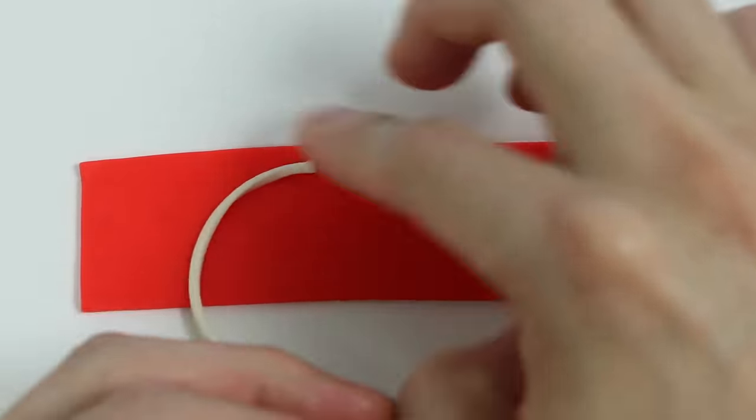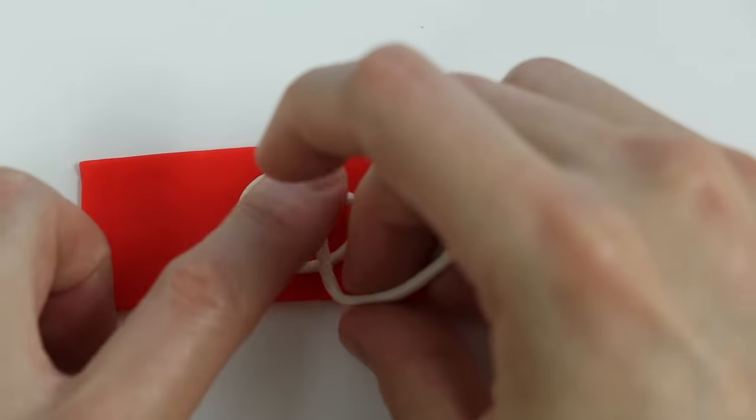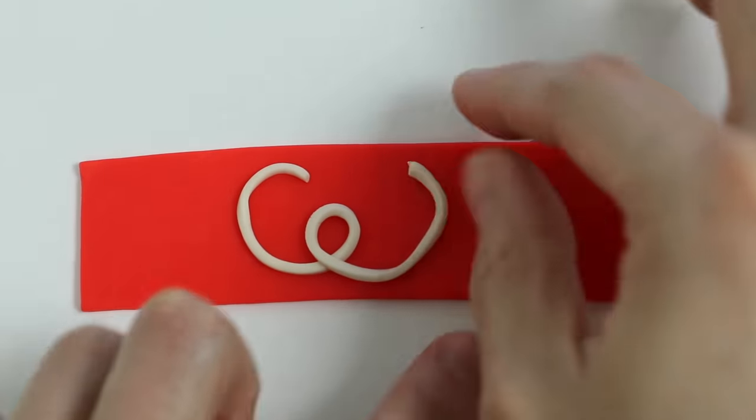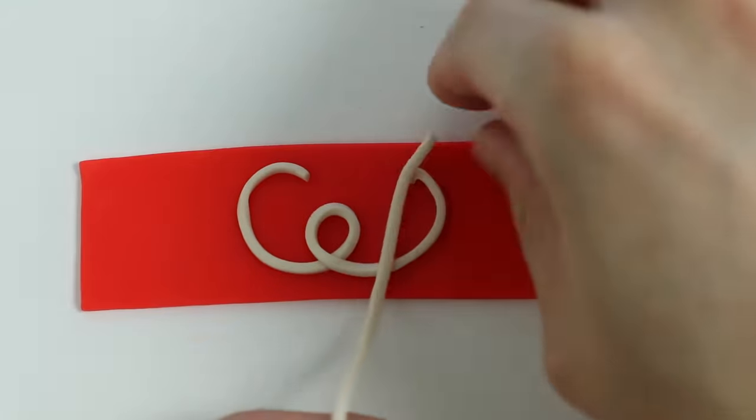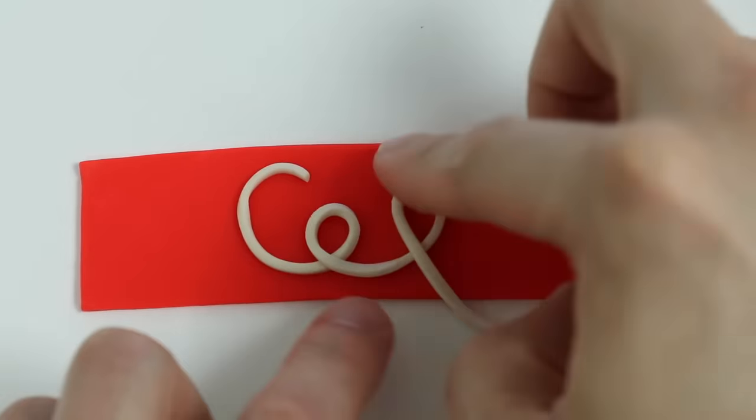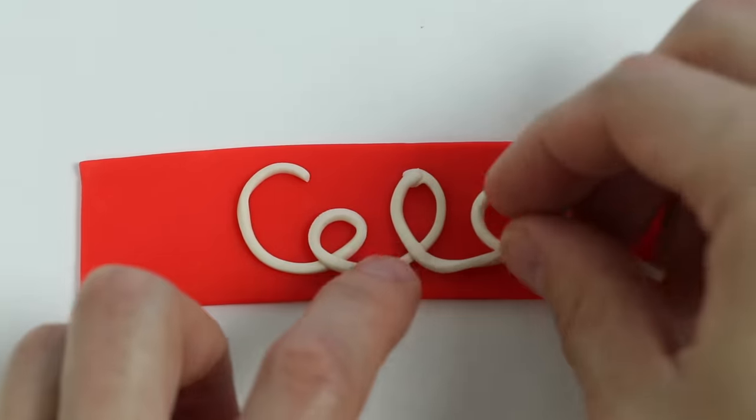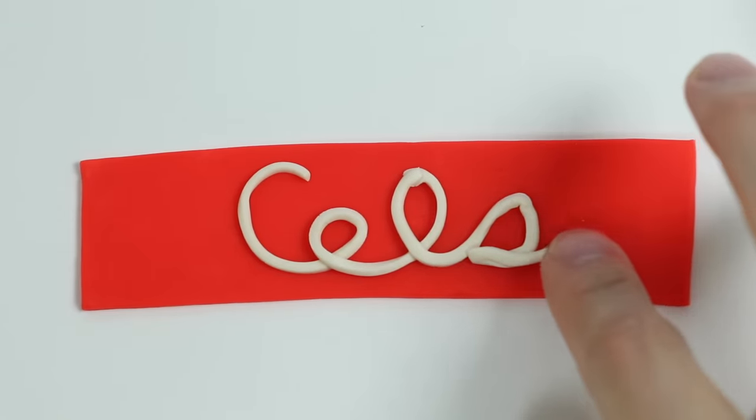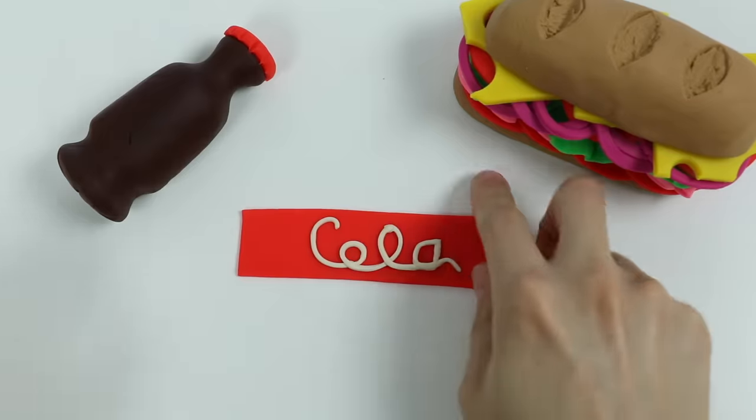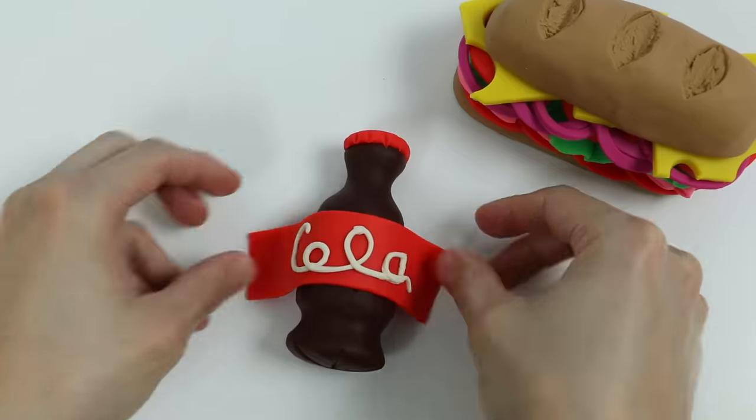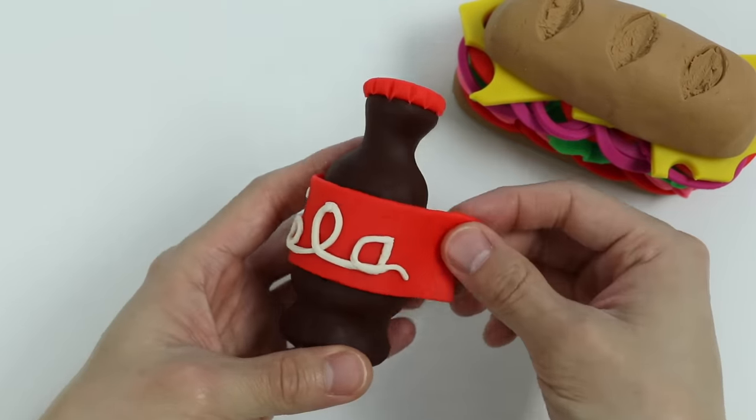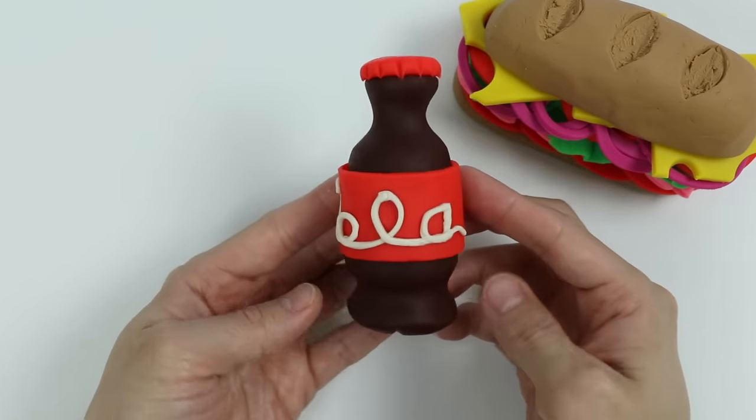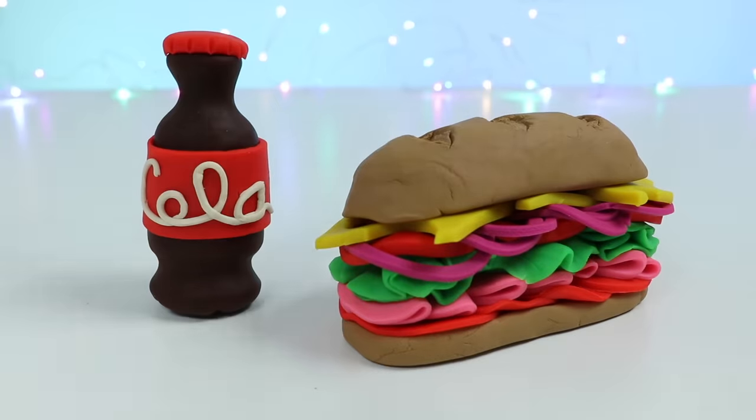Now let's wrap it around the bottle. Perfect, we made our cola label. Now let's wrap it around the bottle. Perfect, now we can wash our sandwich down with an ice-cold soda. Let's slice this sandwich in half.